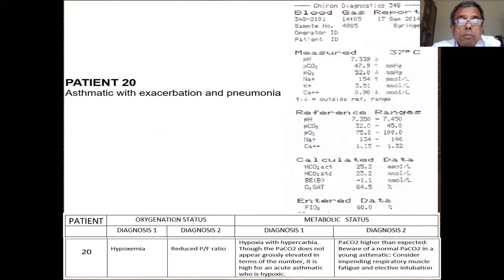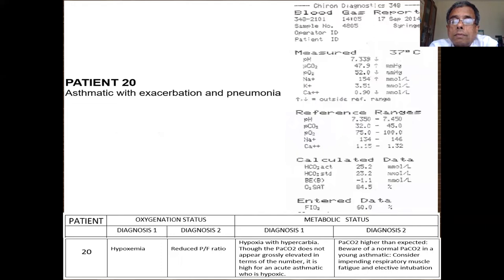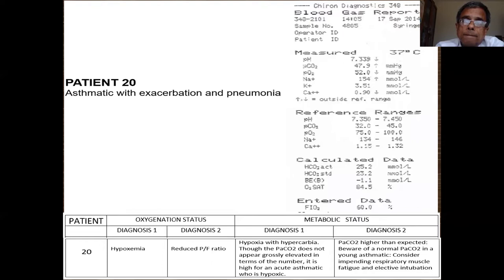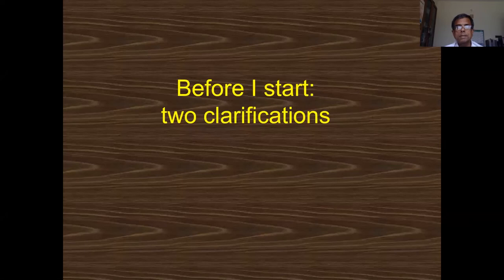Question 20, the last patient: asthmatic with exacerbation and pneumonia, hypoxemic with reduced PF ratio. CO2 looks acceptable but in an asthmatic you should expect a low CO2 — this CO2 is high for the pH. Even a normal-looking CO2 in an asthmatic is bad; it suggests the person may be going into respiratory muscle fatigue and exhaustion. You may need to provide respiratory support.